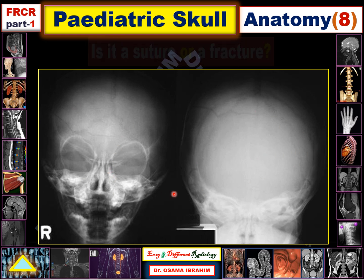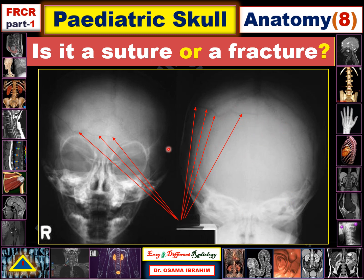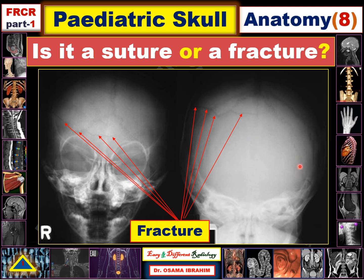Now for the question of the presentation: is it a suture or a fracture? There are lucent lines extending through the occipital bone in this Towne's view, and also extending into the parietal bone. This location is not the expected normal site for sutures. Therefore, this is considered a fracture. By knowing the normal suture locations, you can discriminate between a fracture and a suture.